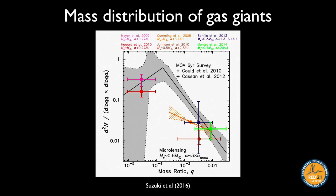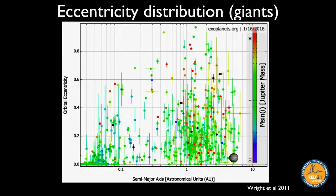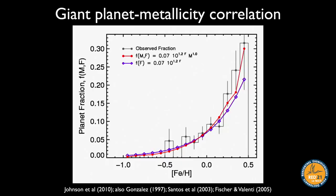The mass distribution — determined by microlensing — shows that there are fewer more-massive gas giants than less-massive ones: for every some number of Jupiters there's one super-Jupiter and so on. There are a lot of ice-giant-mass planets out there, roughly Neptune or super-Earth mass. The eccentricity distribution — how stretched out planet orbits are — is another key constraint, which we'll discuss more shortly.